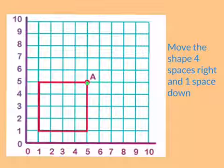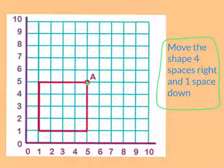So what I'm going to do is I'm going to follow these instructions with point A. So I'm going to move it four spaces right, one, two, three, four. It's going to be there. And then one space down would be there. So that is my new point A.